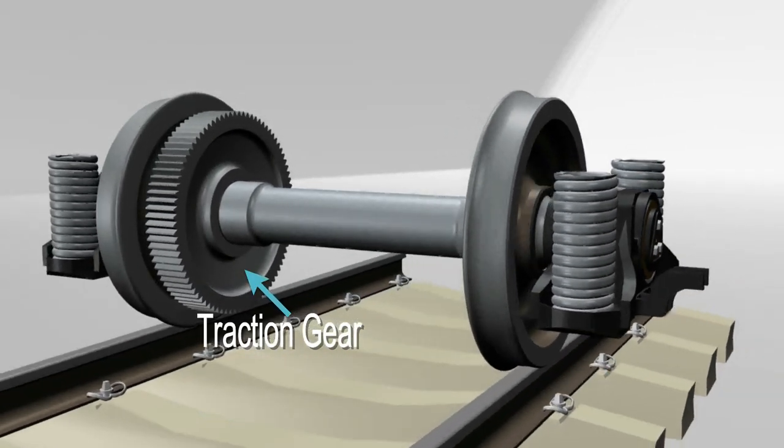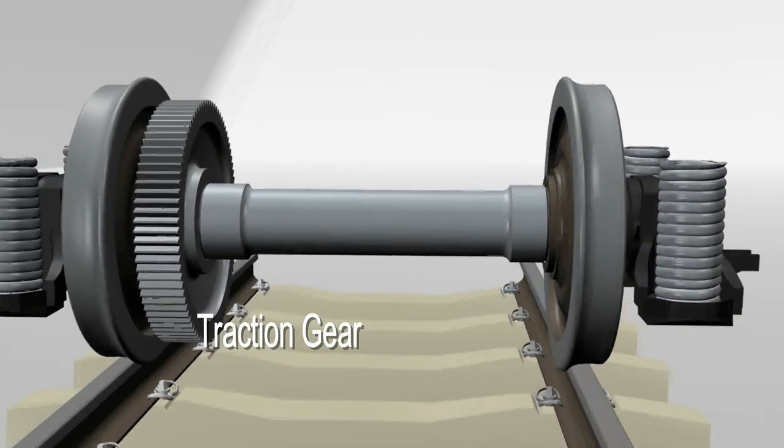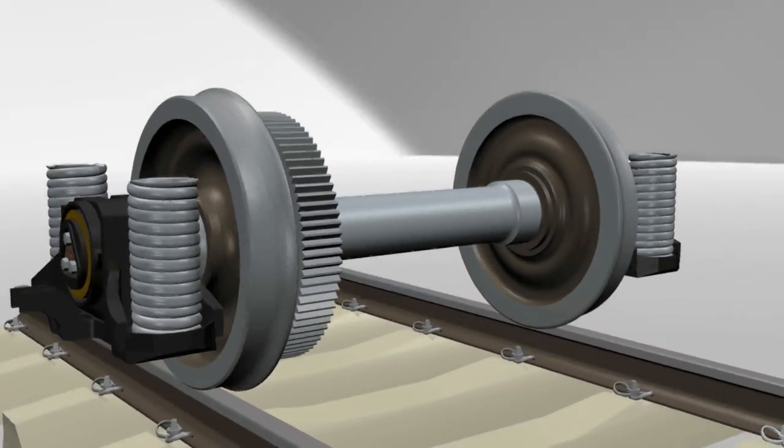Here is the wheelset with axle box and traction gear. Also, this is the axle box at each end of the wheel axle.